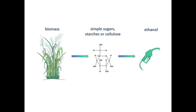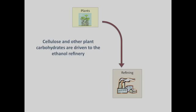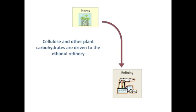All of this biomass contains an enormous amount of carbon. In fact, cellulose is the most abundant biological molecule on Earth. This biomass can be used to create ethanol. Once the biomass crop reaches maturity, it is harvested and transported to a refinery, where it will be turned into ethanol.